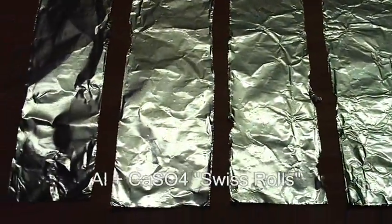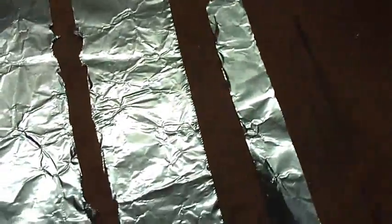All right, I'm making thermite wads, I guess, or Swiss rolls, whatever we call them. I have four strips here of aluminum foil, and a little strip here I'm going to try and make some sort of fuse item out of it.